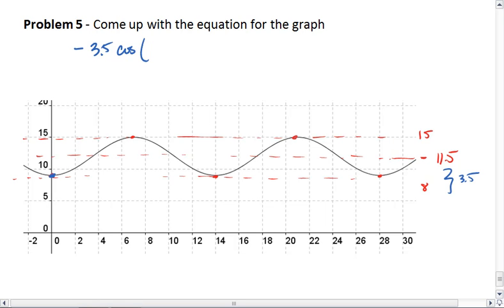Let's see our period. So, time to go from min to min is 14. We get 2π over 14x, plus our baseline of 11.5.